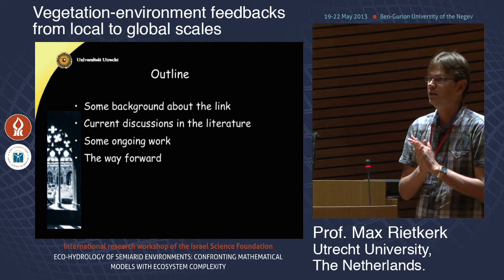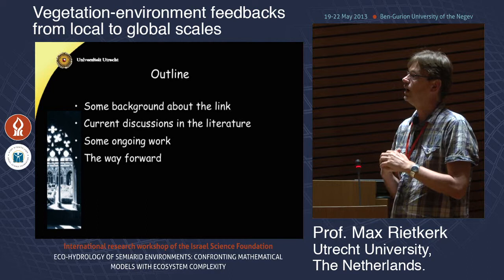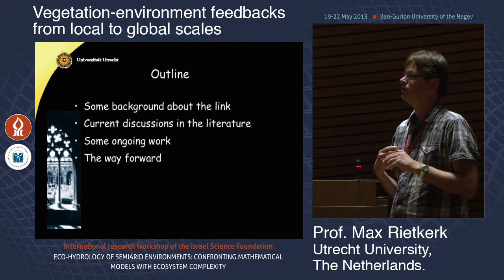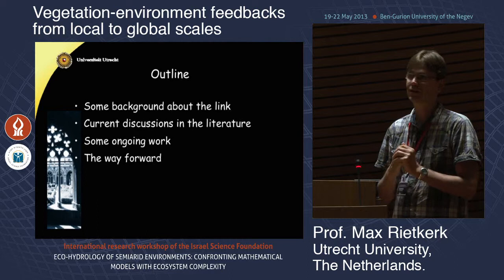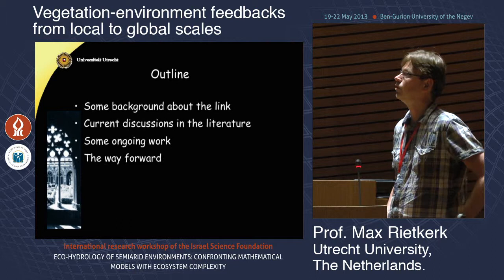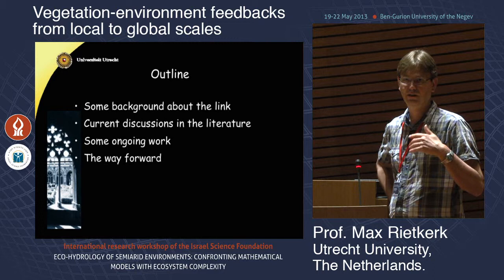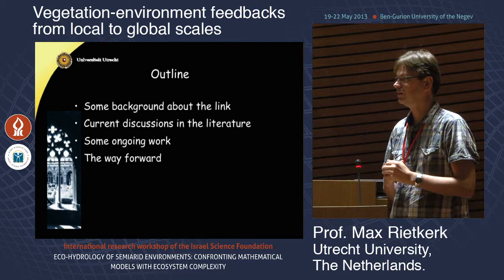What I would like to present is some background about the link between vegetation patterns and critical thresholds, and I would like to highlight some current discussions in the literature about that link. I will simplify the story a lot and will probably not mention a lot of relevant papers — I know they're out there. I try to come up with a nice, simple background about the link between those patterns and critical thresholds, then highlight some ongoing work, and say a little bit about the way forward in order to start a discussion about where we are now and how we are moving forward.